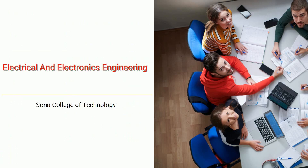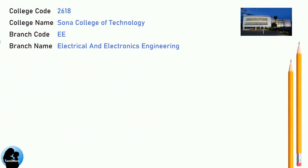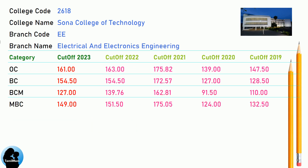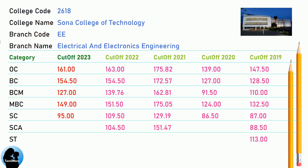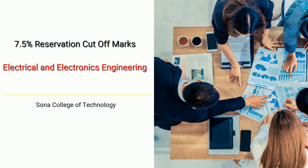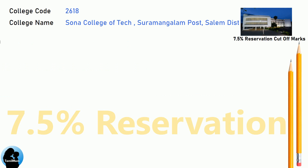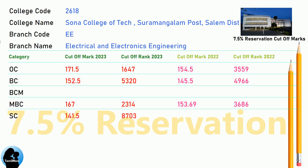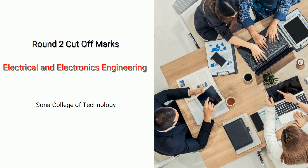DNA cut-off for Sona College of Technology in Electrical and Electronics Engineering. DNA 7.5 Reservation cut-off for Sona College of Technology in Electrical and Electronics Engineering.